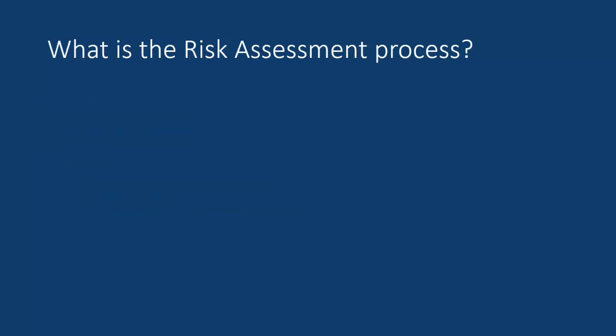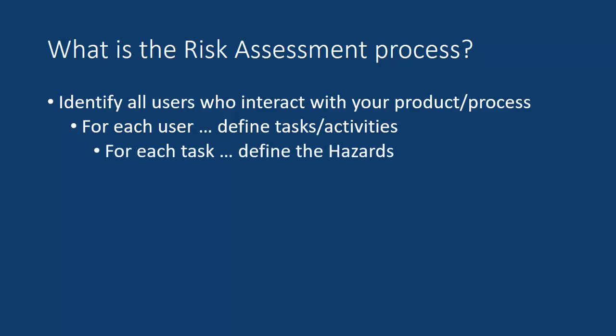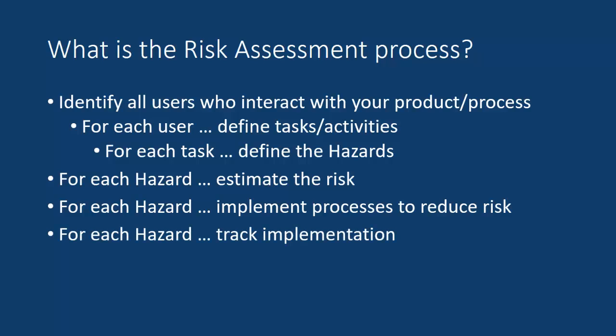Let's talk about the risk assessment process. It starts out by identifying every user who's going to be interacting with the product or process you've designed. In Senior Project, that's also you — you will be testing your product or process, so you are one of the users. But of course, it's also your end user for the product. For each user, identify what things they'll be doing with the product — what are their tasks or activities? For every task or activity, define what the hazards are that the user might be exposed to. For each of those hazards, estimate what the risk is for that particular user. For the higher risk ones, implement either design changes or processes for the user to follow in order to reduce the risk, and then track that it has been implemented. If it's a design change, make sure you put it into your design. If it's a process improvement, document that process and make sure that the user is aware of it.